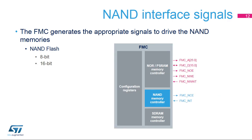The FMC generates the appropriate signals to drive NAND flash memory. The address, data, and control signals are shared with the NOR PSRAM controller. The Command Latch Enable (CLE) and Address Latch Enable (ALE) signals of the NAND flash memory device are driven by address signals from the FMC controller connected to Address Line 16 and Address Line 17, respectively. The ALE is active when writing to the address section, and the CLE is active when writing to the command section.